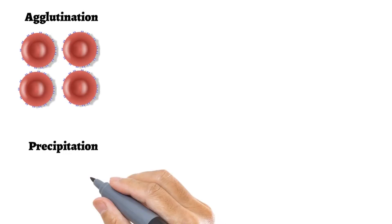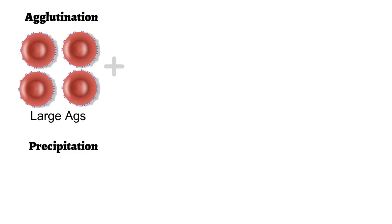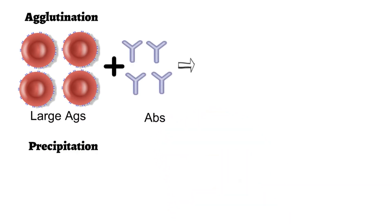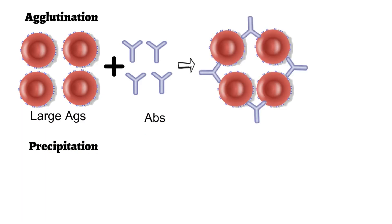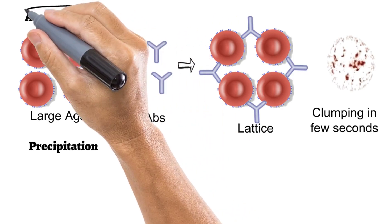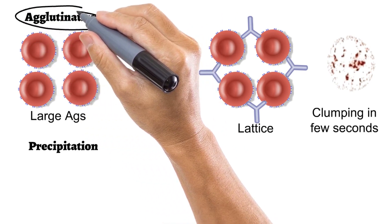Normally, when large and particulate antigens like RBCs are mixed with their specific antibodies, they bind to each other in a specific pattern called a lattice. The reaction is then visualized in the form of clumping within a few seconds, as you may have seen in the blood group detection test. This reaction is called the agglutination reaction.